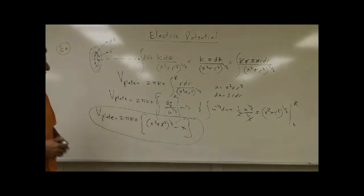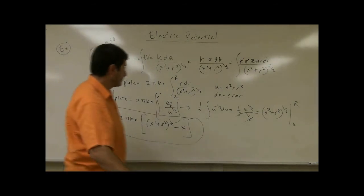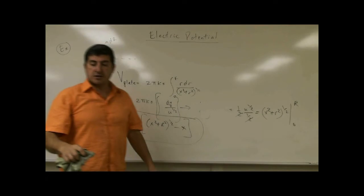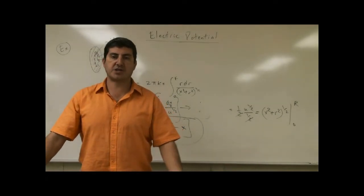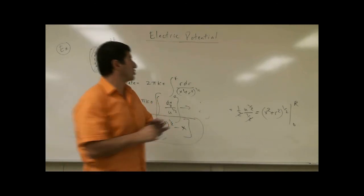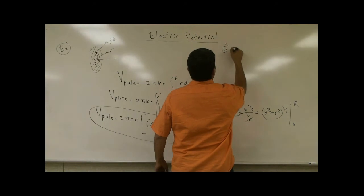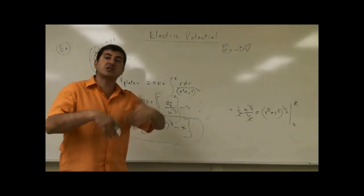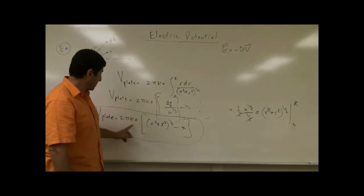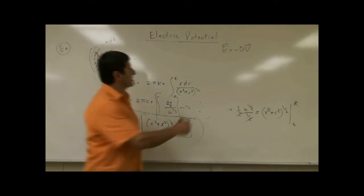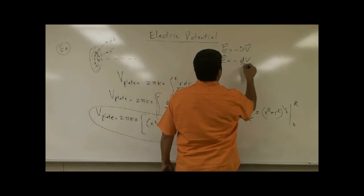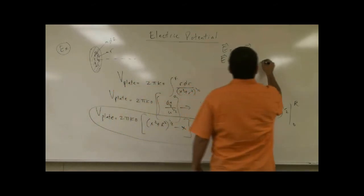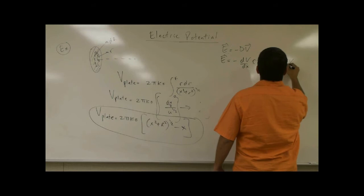One thing you could do here is check your answer by using the relationship between electric field and potential. Electric field is negative the gradient of potential — E equals negative gradient of V. In this case, the potential only depends on the variable x, so E equals negative dV/dx, i-hat. If the potential also depended on y and z, we would have negative dV/dy j-hat and negative dV/dz k-hat, and we would call these partial derivatives.